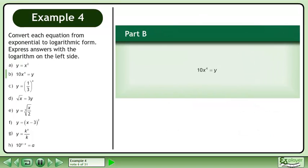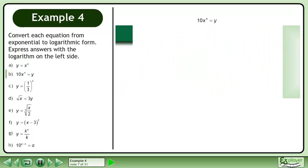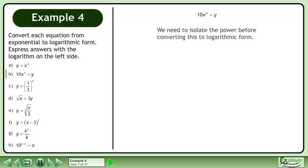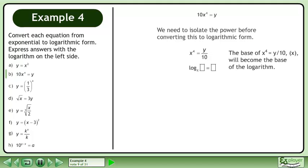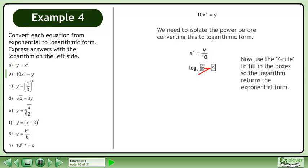In Part B, convert 10 times x to the power of 4 equals y to logarithmic form. We need to isolate the power before converting this to logarithmic form. Divide both sides by 10 to isolate the power. The base of x to the power of 4 equals y over 10, x, will become the base of the logarithm. Now use the 7 rule to fill in the boxes so the logarithm returns the exponential form. The logarithmic form of 10 times x to the power of 4 equals y is the base x logarithm of y over 10 equals 4.